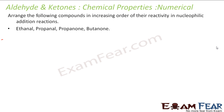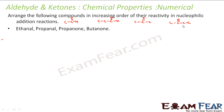Now we have to arrange the following compounds in increasing order of their nucleophilic addition reactions. Let me draw the structures: ethanal (CH3CHO), propanal (CH3CH2CHO), propanone (CH3COCH3), and butanone (CH3COC2H5). We need to rank these four compounds.